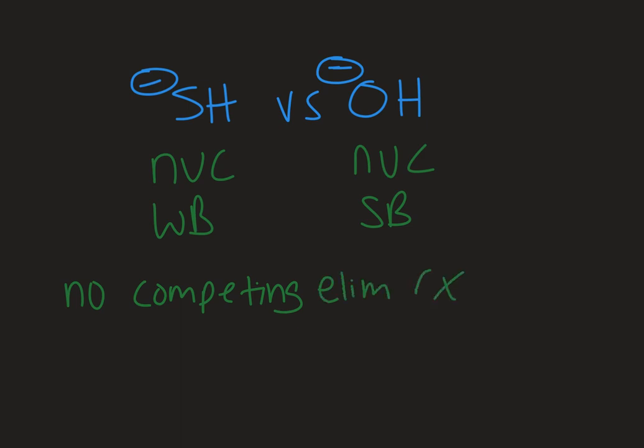That means when we're trying to synthesize a thiol, we're not going to have to worry about alkenes forming. We're only going to see substitution products, and that makes the synthesis of thiols a little bit more straightforward.